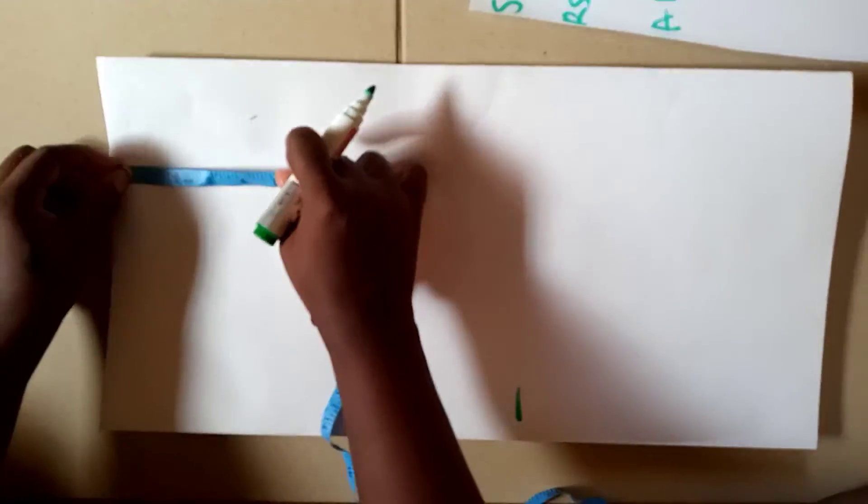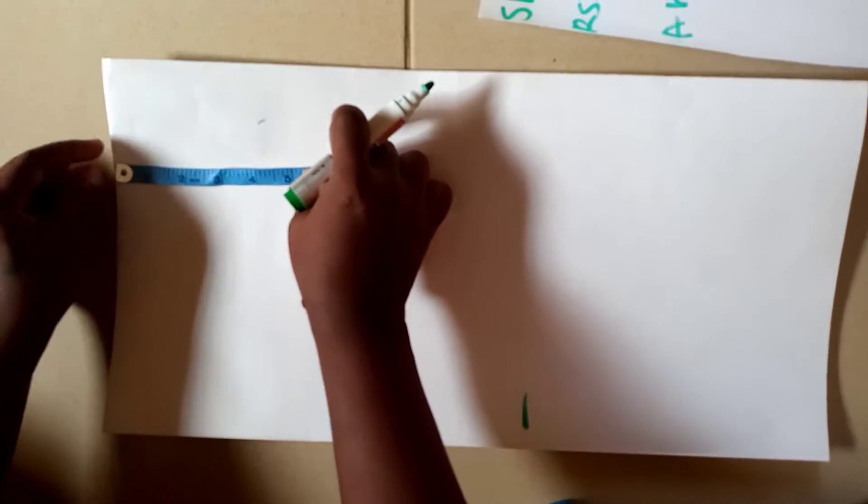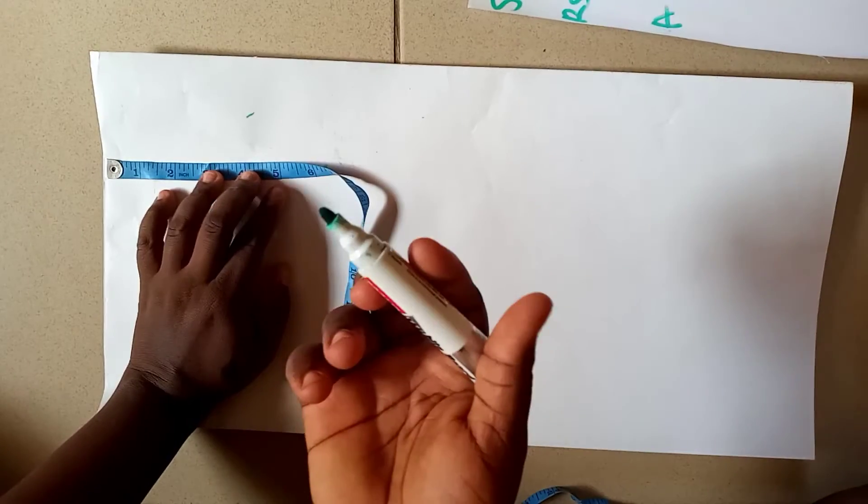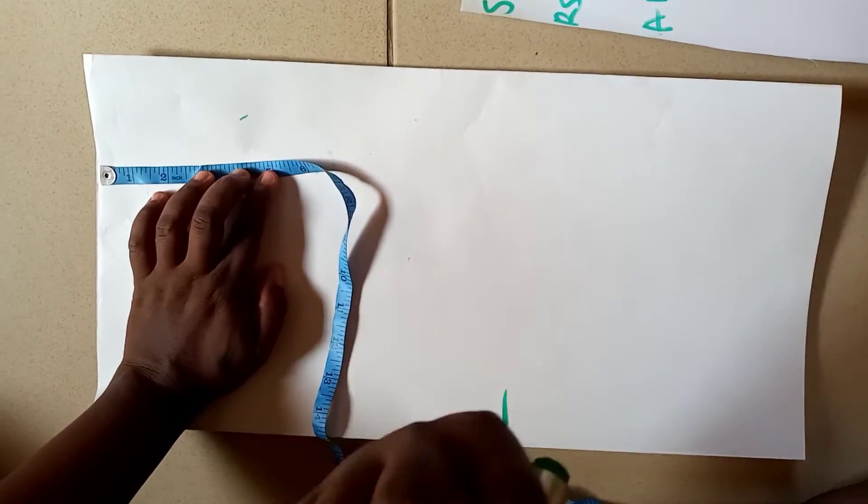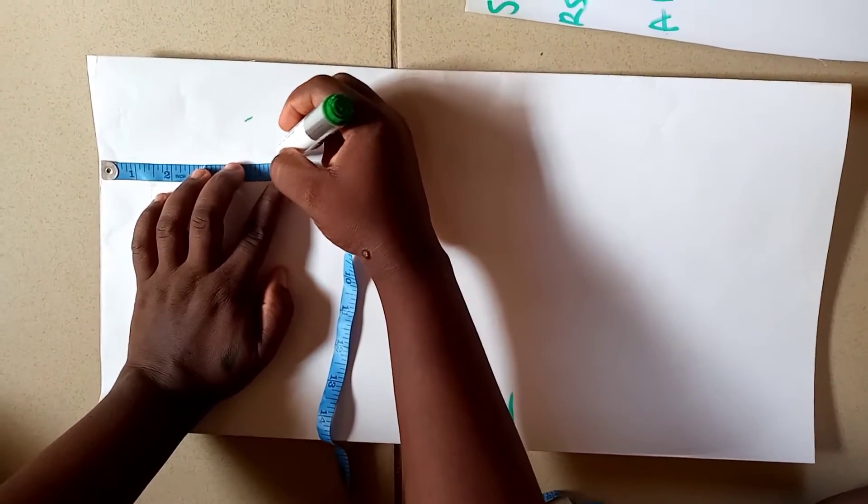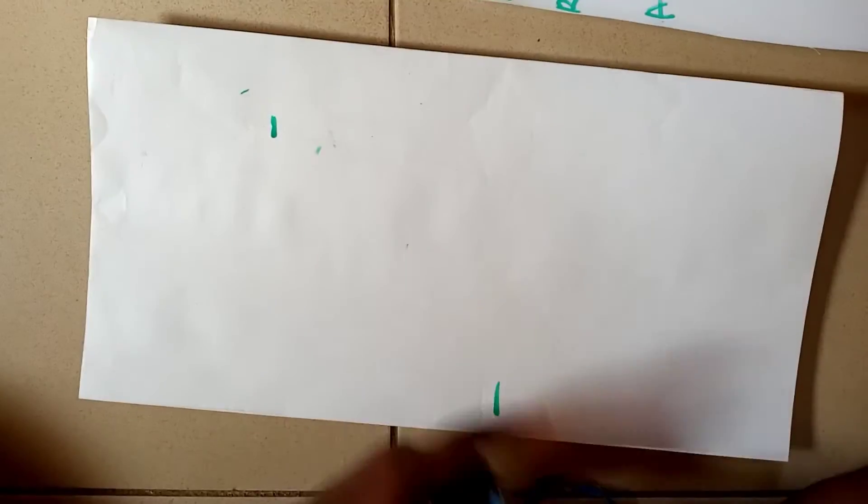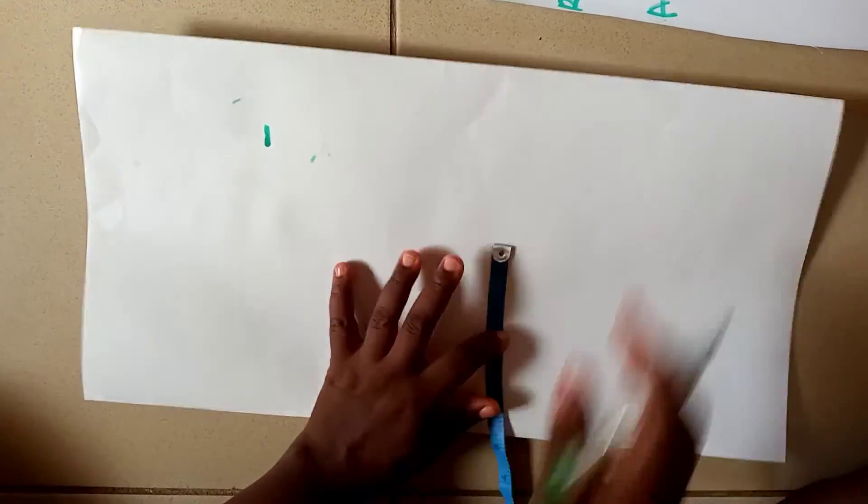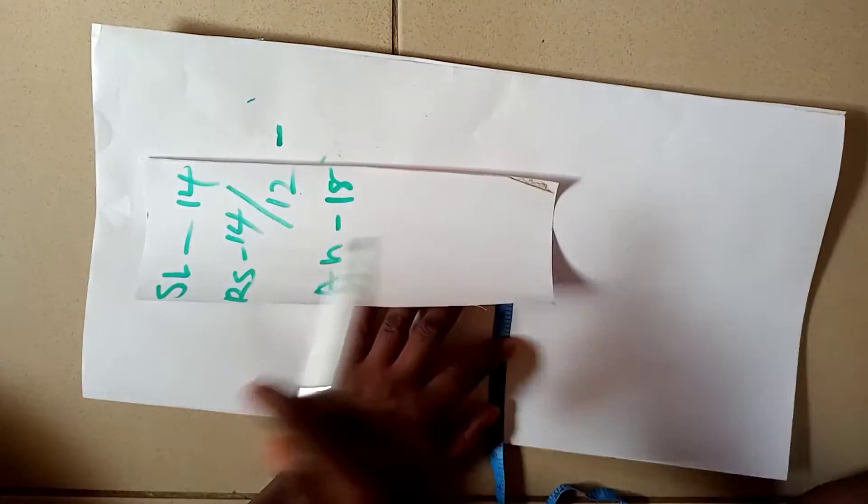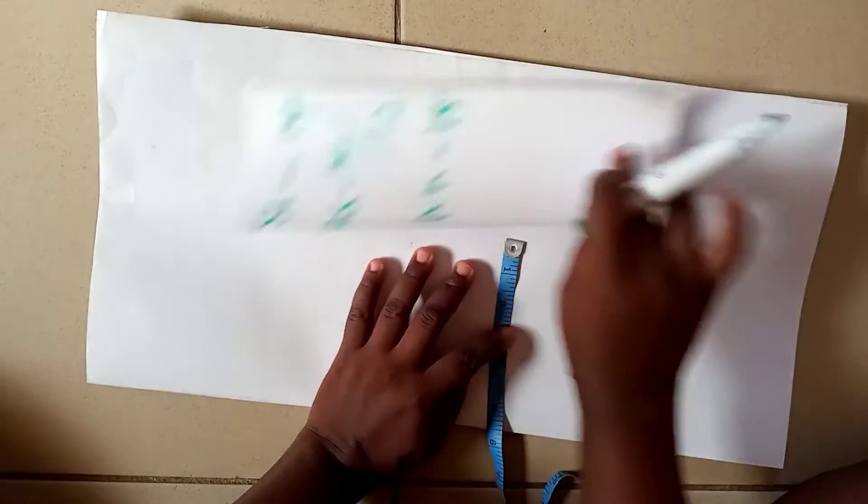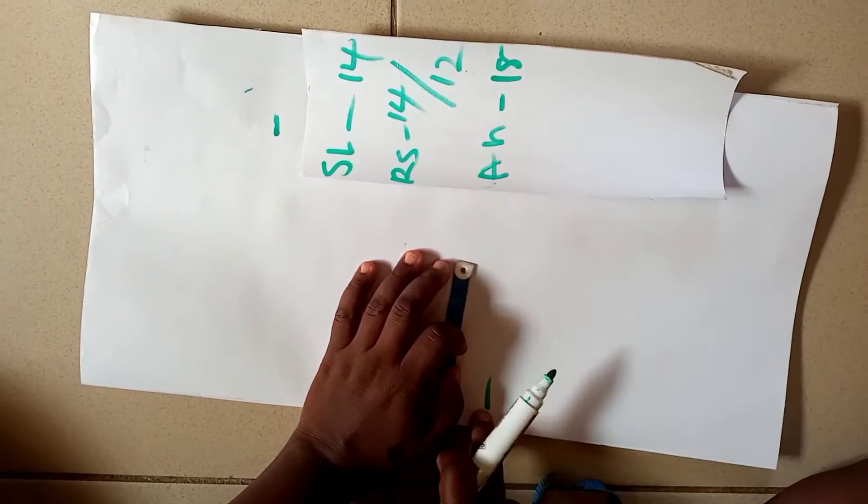Then you come to this edge, you come down by five inches. It depends - five or four and a half, let's just do five inches. You come down by five inches. So on this place, you're going to be inputting this 12 here, that's the sleeve length.